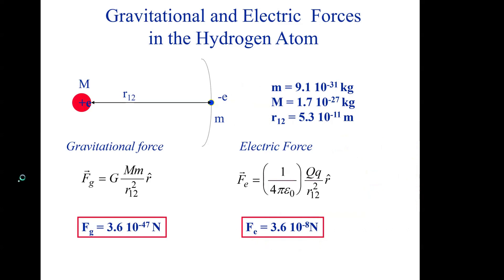A student asks a question about the end of the two formulas. The instructor clarifies: forget about that notation — it is just a vector indicator. Just remember that for gravitational force we have G m₁m₂ over r squared, and for electric force we have k q₁q₂ over r squared.